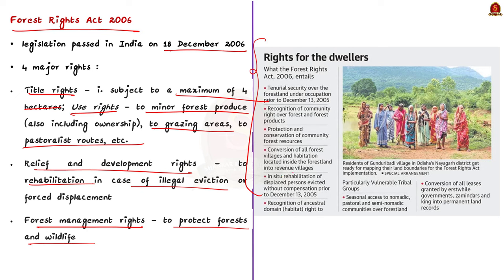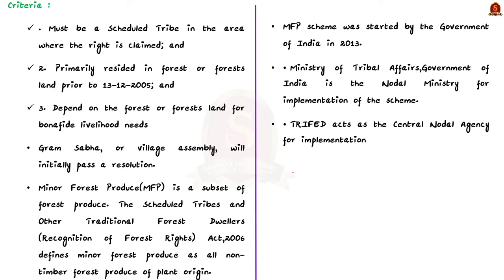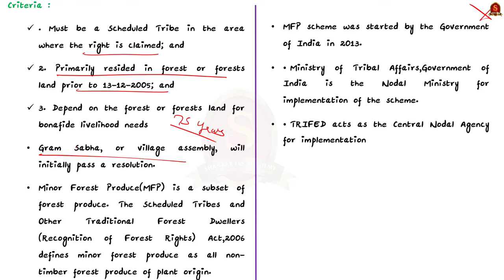Eligibility criteria under FRA: to qualify as a forest-dwelling scheduled tribe, three conditions must be satisfied — the person must be a scheduled tribe in the area where the right is claimed; must have primarily resided in the forest or forest land prior to 13/12/2005; and depend on the forest or forest land for bona fide livelihood needs. To qualify as other traditional forest dwellers under section 2(o) of the FRA, two additional conditions are needed: primarily resided in the forest for three generations (75 years) prior to 13/12/2005; and depend on the forest for bona fide livelihood needs. The Gram Sabha or Village Assembly will initially pass a resolution recommending whose rights to which resources should be recognized, which is then screened and approved at the Taluka level.